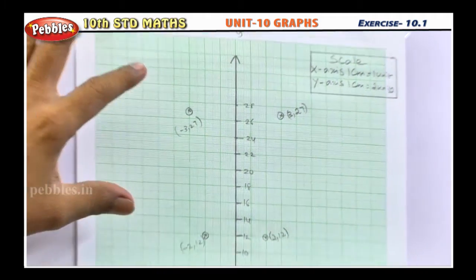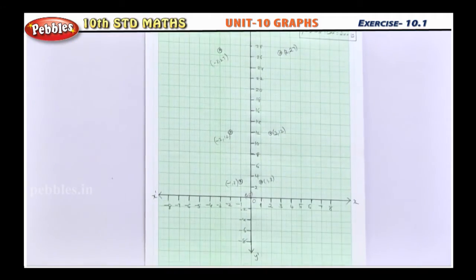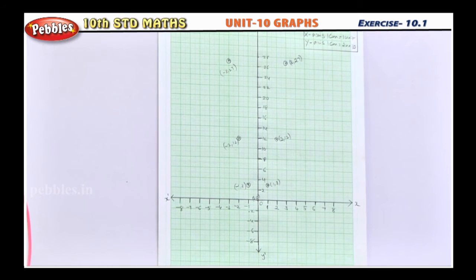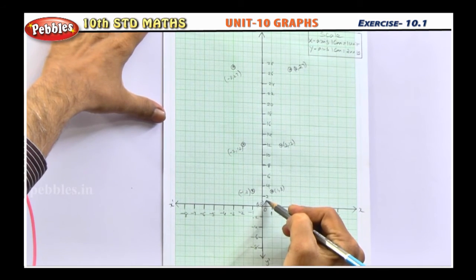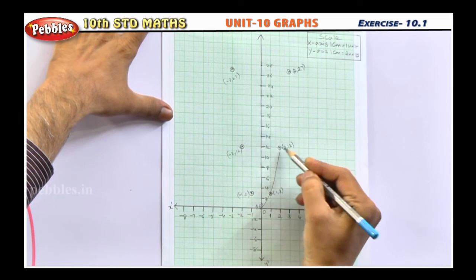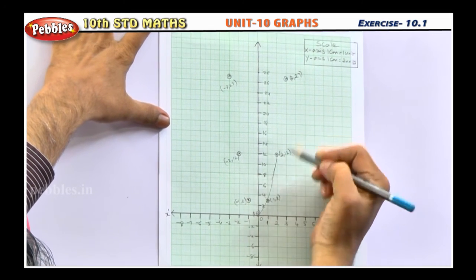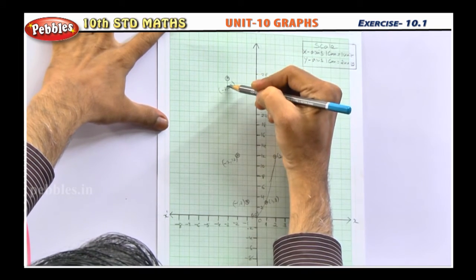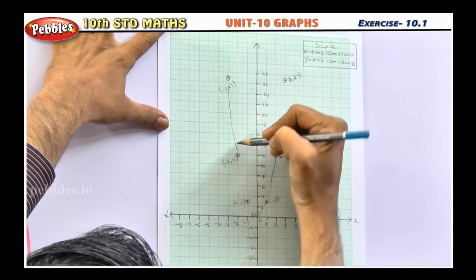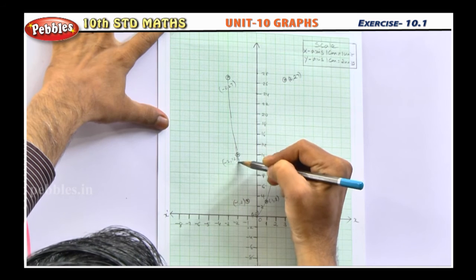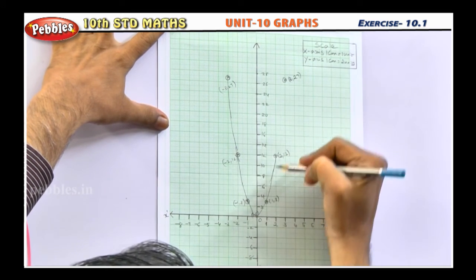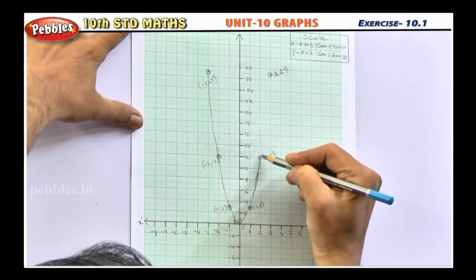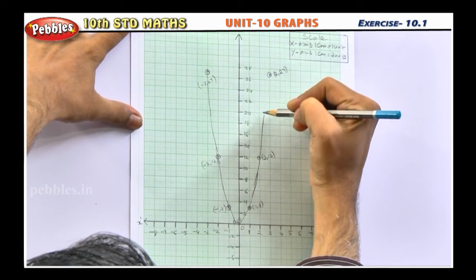Students, after plotting these points you have to draw a smooth curve which looks like a parabola. Now first we draw the curve like this, smooth curve passing through these points. It will come like this. It has to pass through those points. Now this one also smooth curve like this. It will go like this.